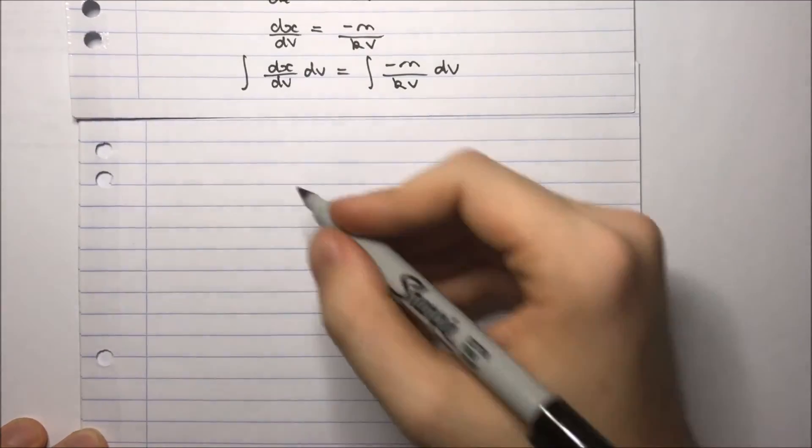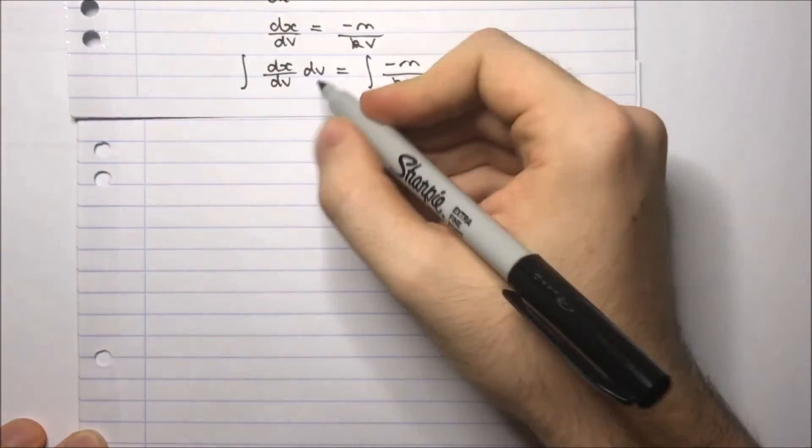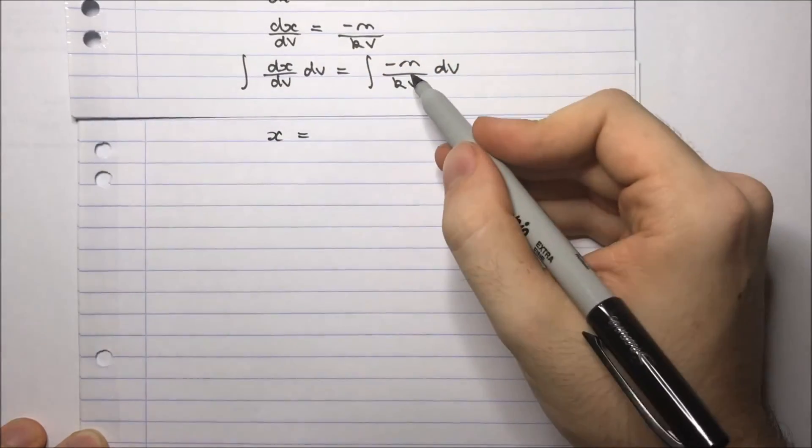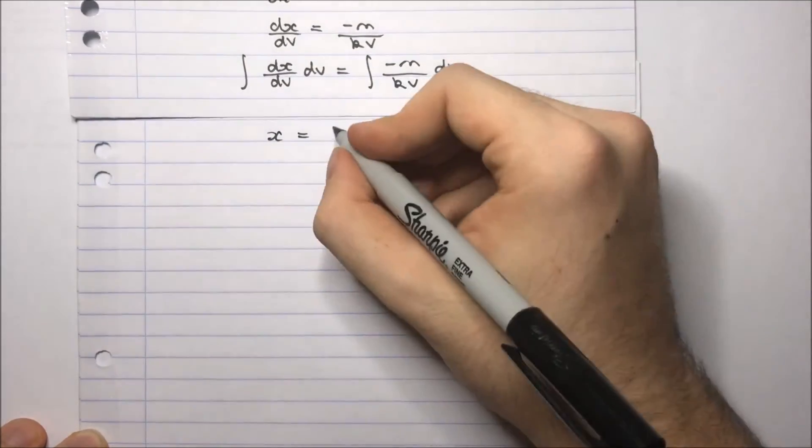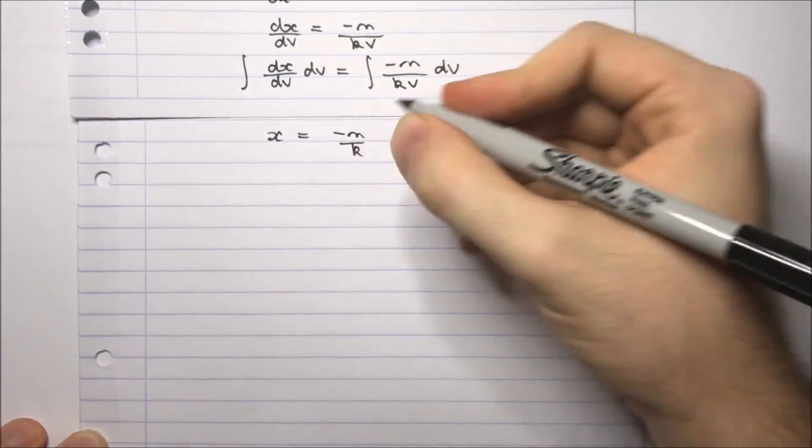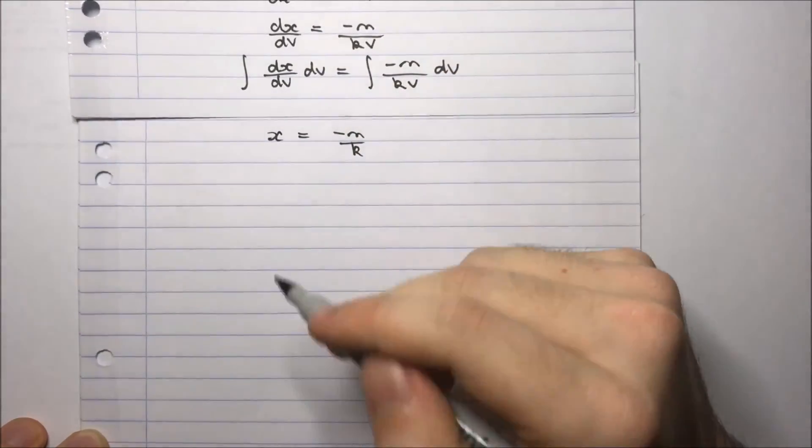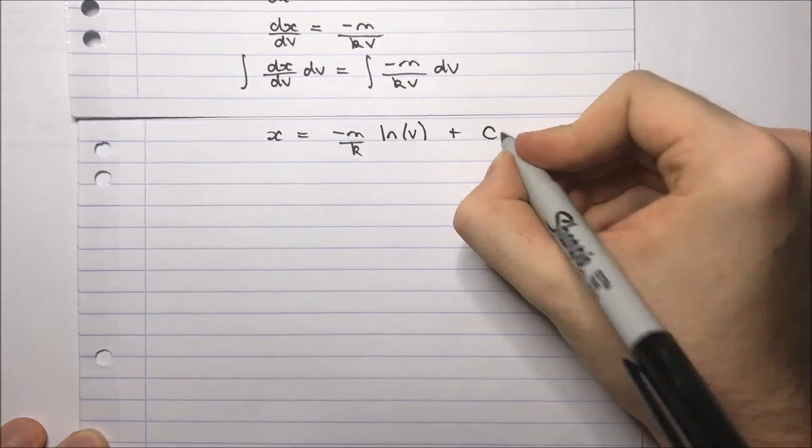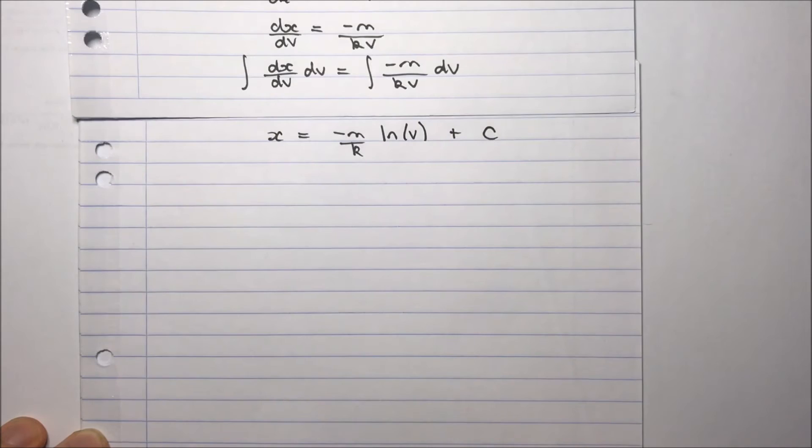So the integral of dx/dv with respect to v should equal the integral of minus m over kv with respect to v. Continuing on, integrating dx/dv with respect to v is simply x. And on the right hand side, minus m/k is simply a constant. So I'm integrating one over v with respect to v. And we know that's the natural log of v. And of course, we can't forget our integration constant plus c.